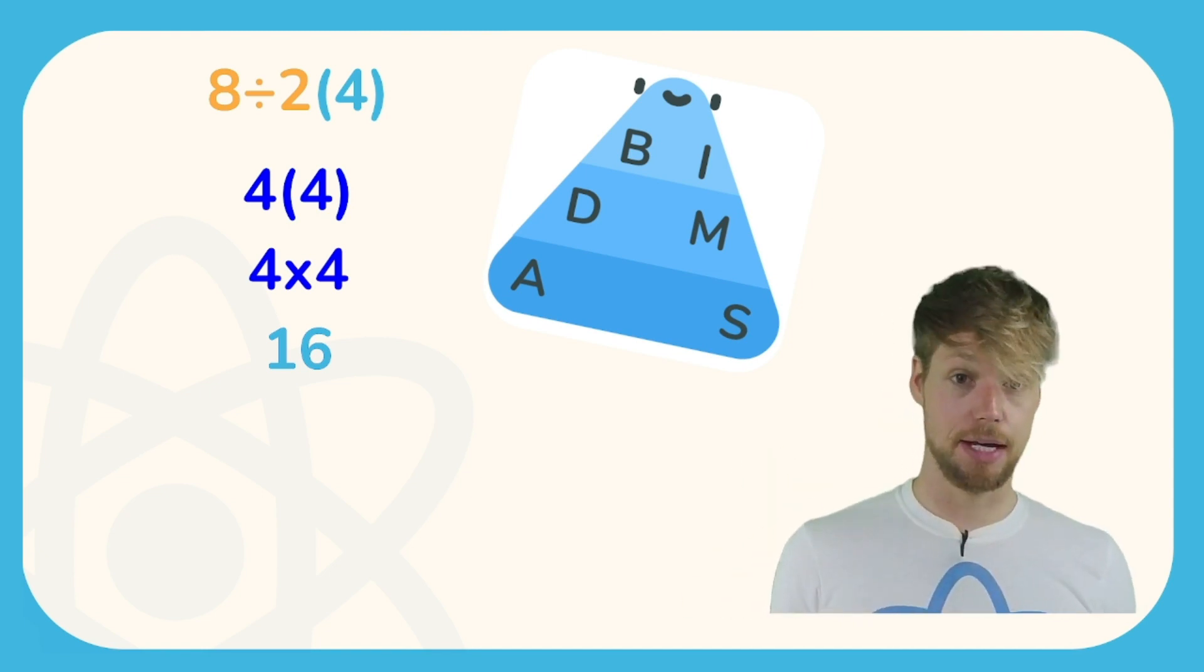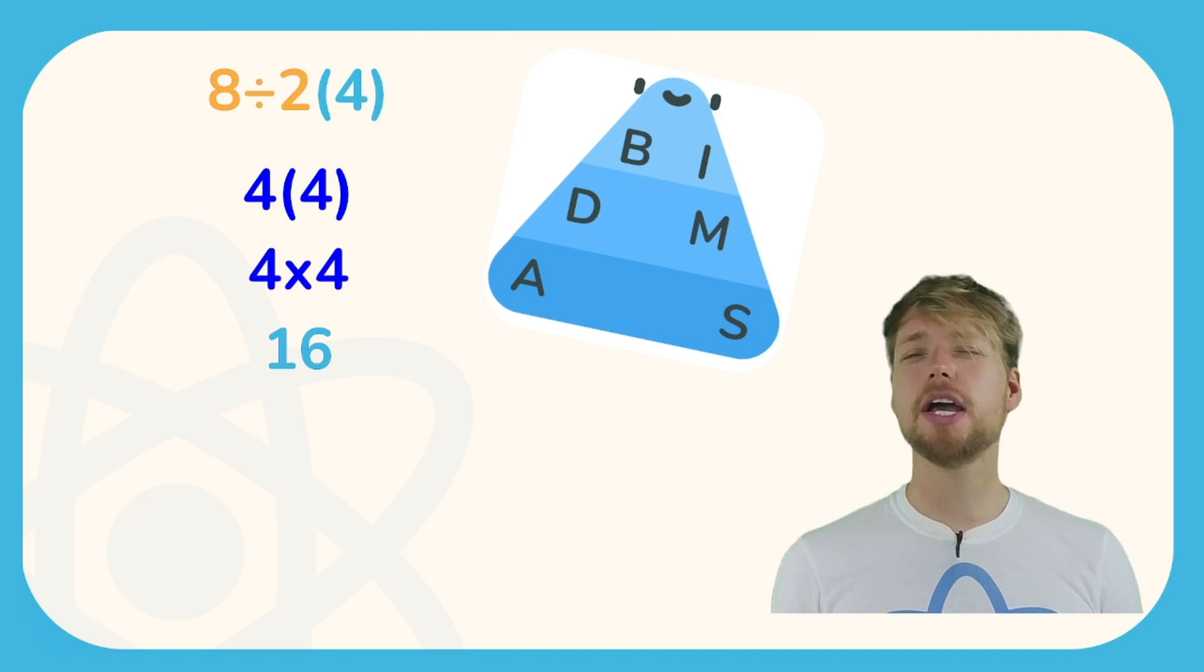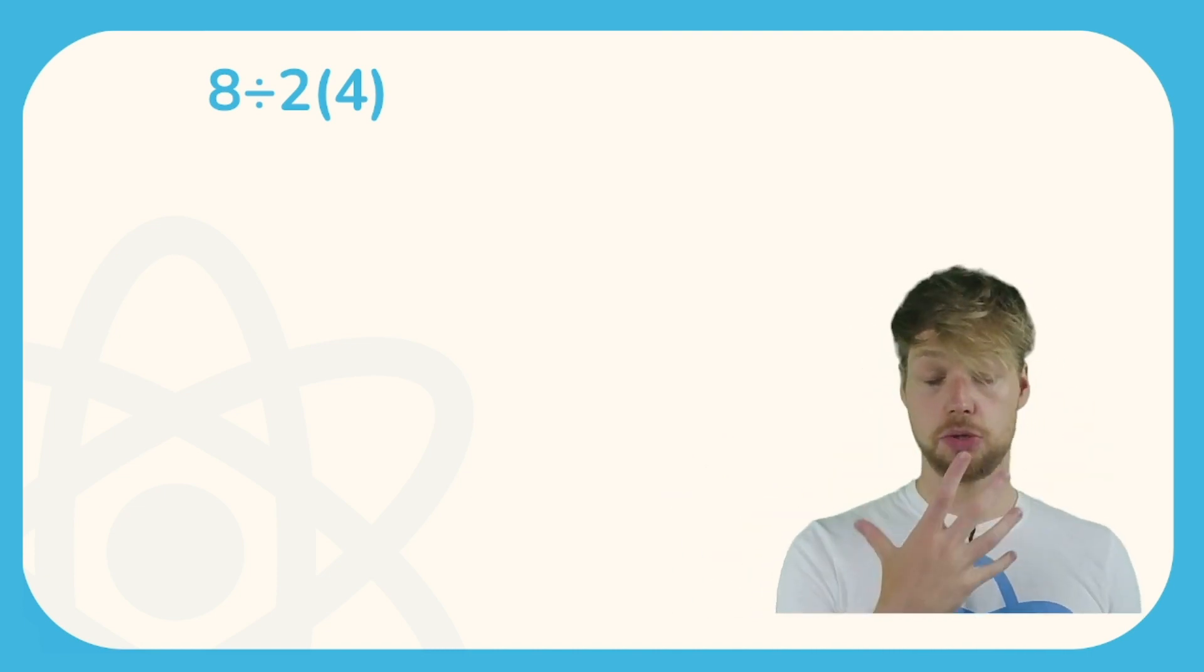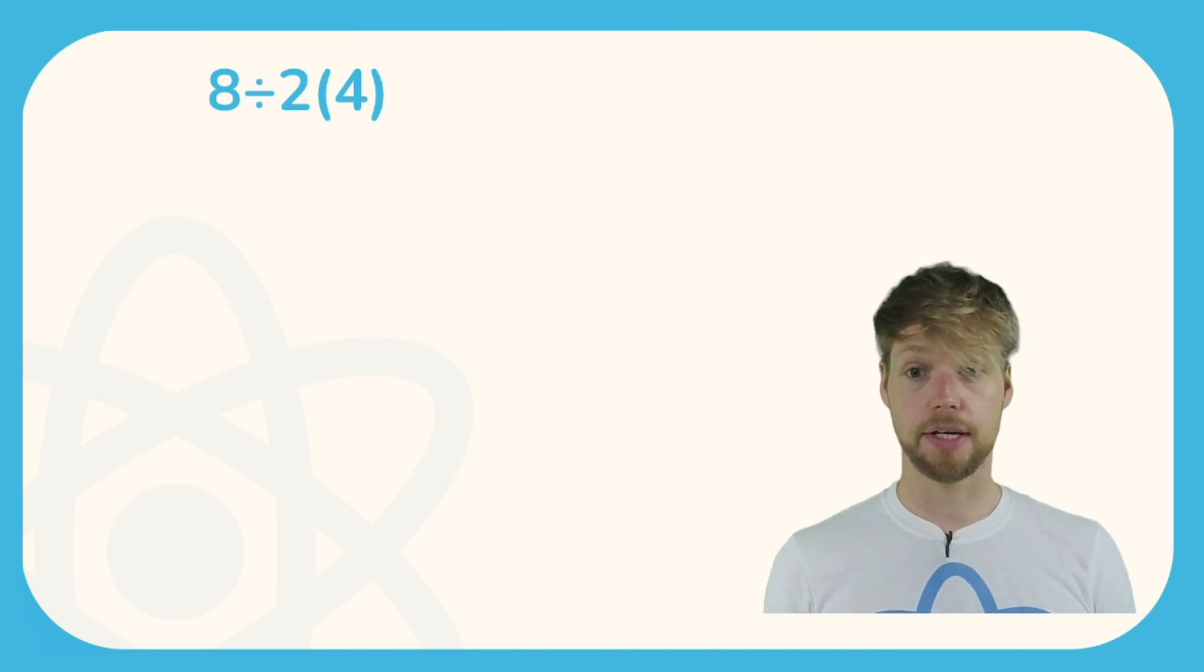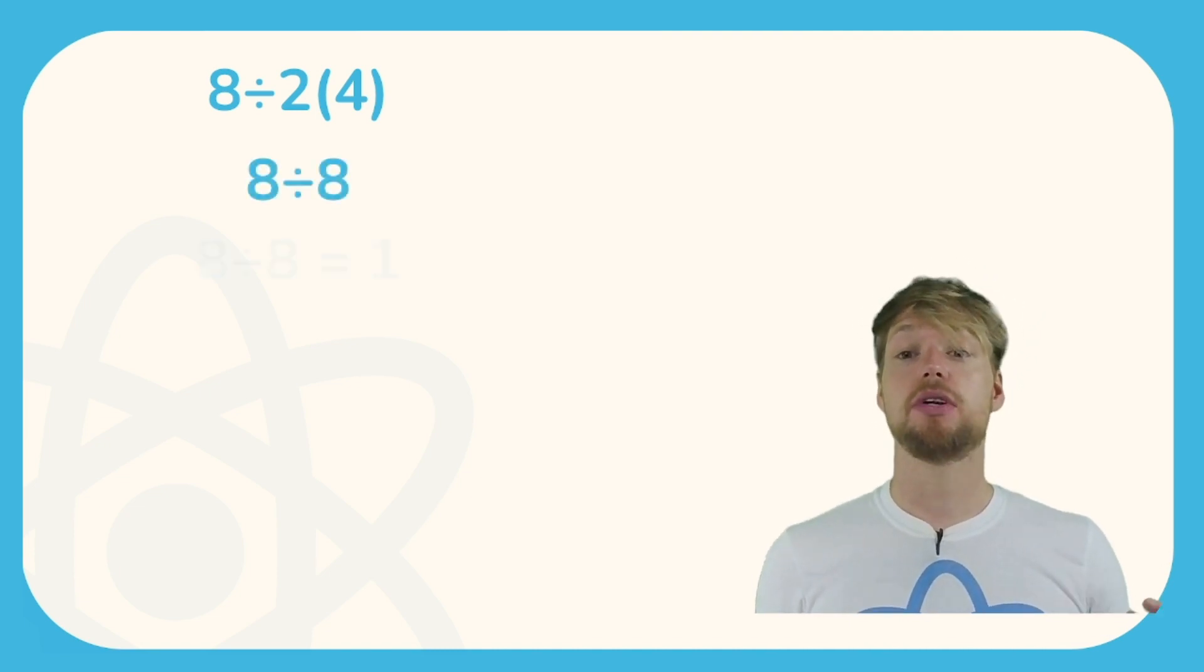Now why all the controversy? Well it's because basically a long time ago, like maybe a hundred years ago or so, in math the divide meant divide everything on the left by everything on the right. So some people would interpret this equation as having to do everything on the left, the 8, divided by everything on the right, the 2 multiplied by 4. That would give us 8 divided by 8 which is just 1.